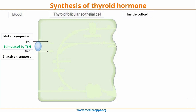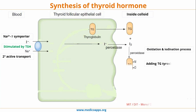Once the iodine is inside the thyroid follicular epithelial cells, it is moved to the colloid, where it combines with thyroglobulin to form MIT and DIT by addition of tyrosine residues. This process is called the oxidation and iodination process, and is carried out with the help of a membrane-bound peroxidase enzyme. Again, this step is stimulated by thyroid stimulating hormone.